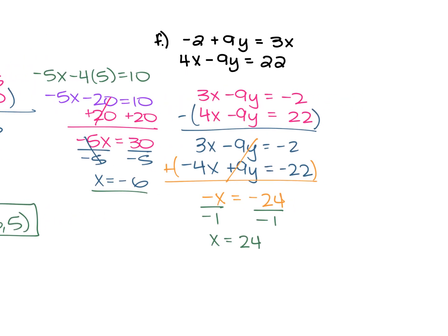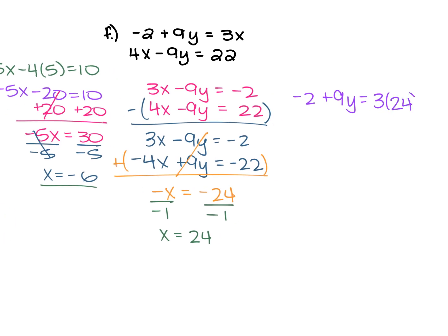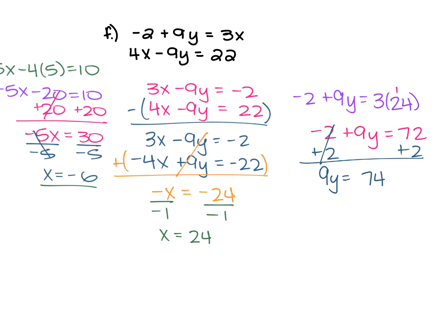From here, pick the top equation and solve for y — we're working with smaller numbers. We have negative 2 plus 9y equals 3 times x, which is 24. Multiply: 3 times 24 is 72. So negative 2 plus 9y equals 72. Add 2 to both sides to get 9y equals 74. Divide each side by 9 and y equals 74 over 9. So with x of 24 and y of 74/9, the solution is the ordered pair (24, 74/9).